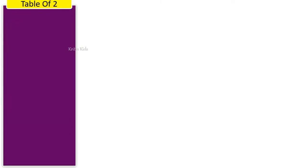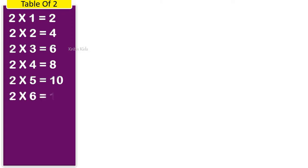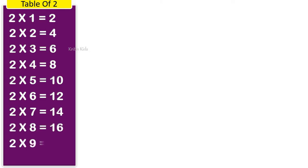Table of two. 2 1s are 2, 2 2s are 4, 2 3s are 6, 2 4s are 8, 2 5s are 10, 2 6s are 12, 2 7s are 14, 2 8s are 16, 2 9s are 18, 2 10s are 20.